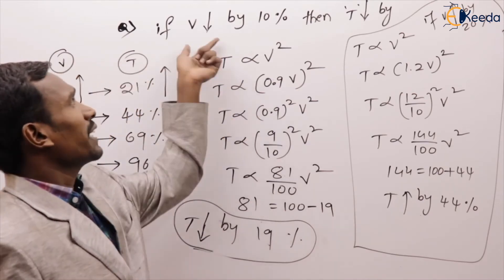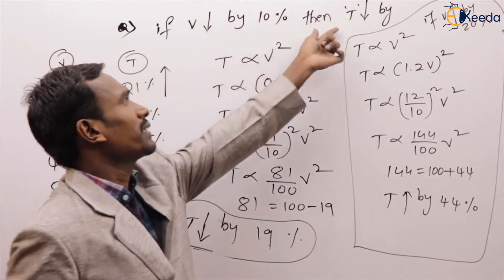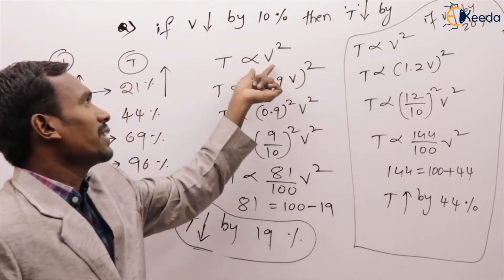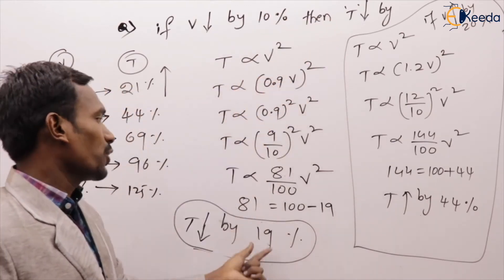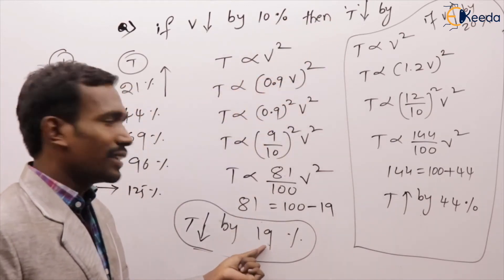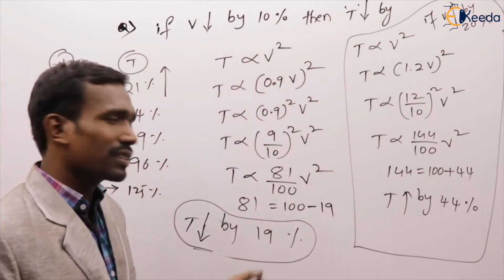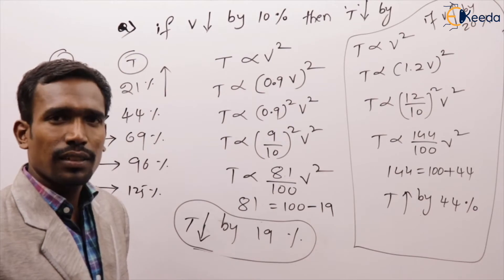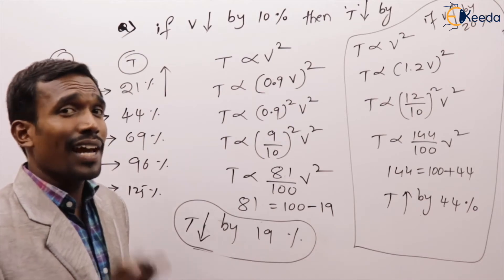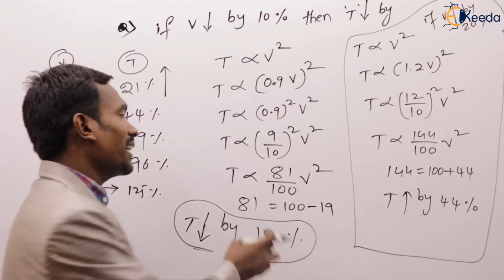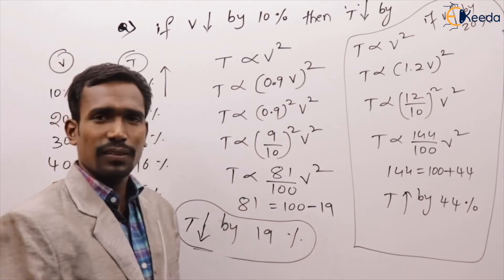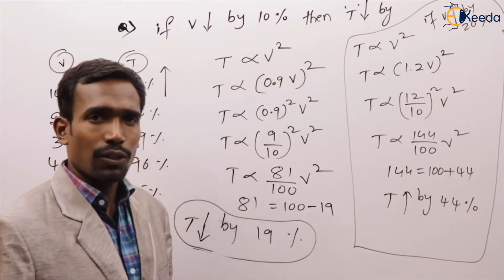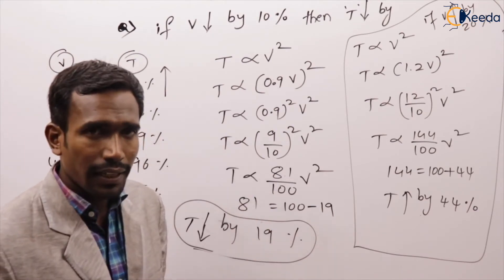So if voltage reduced by 10%, then torque reduced by 19%, because 9 squared equals 81.